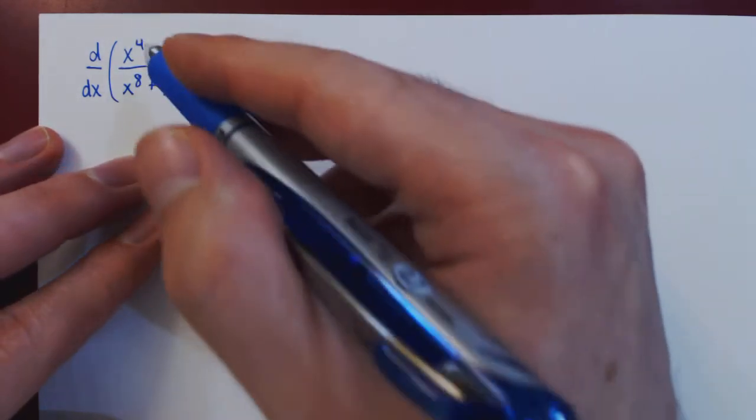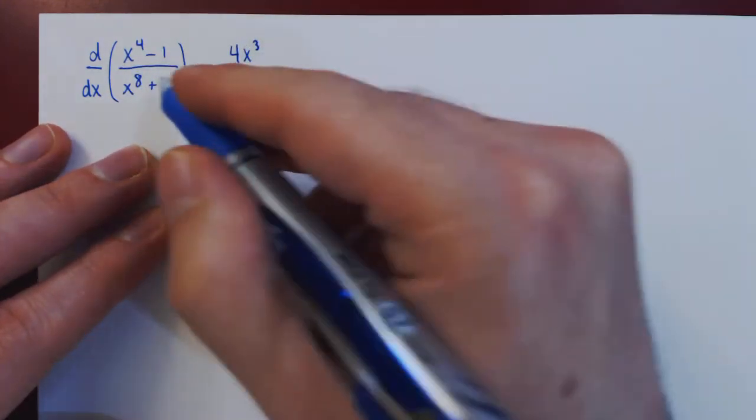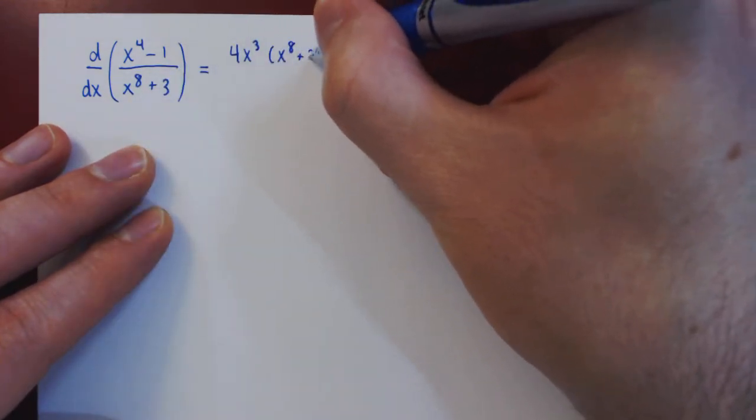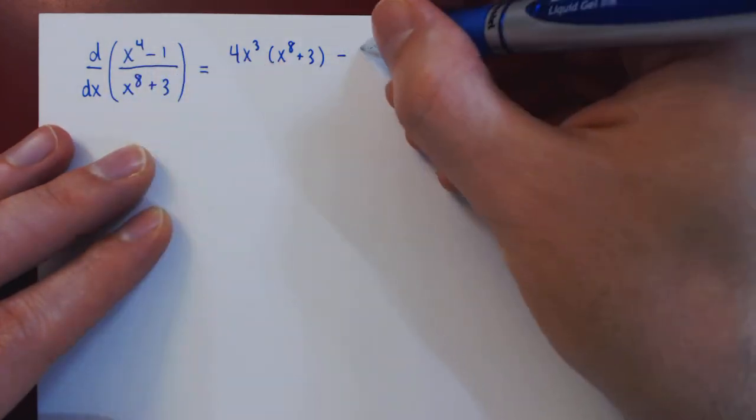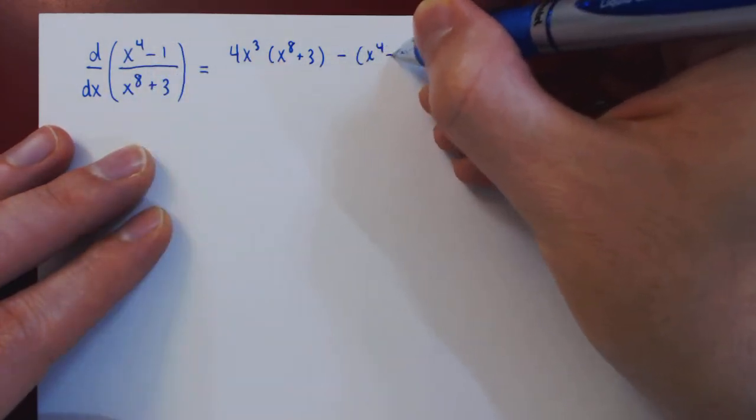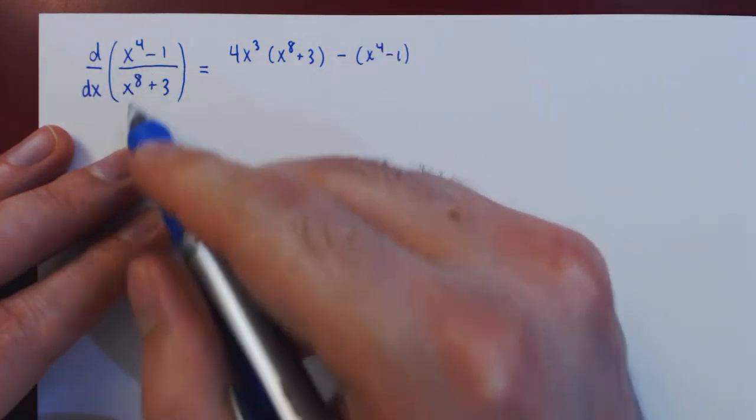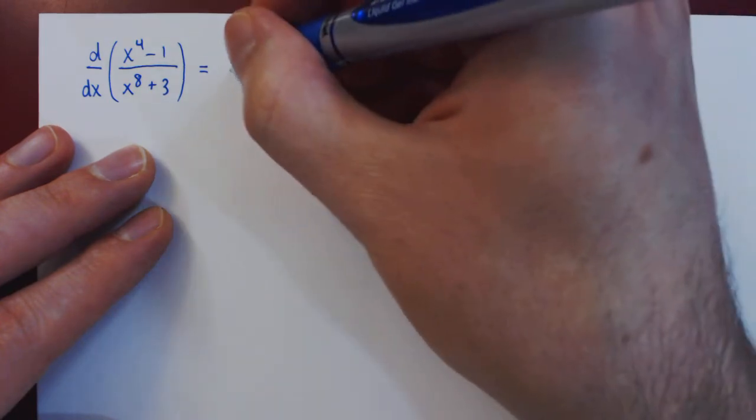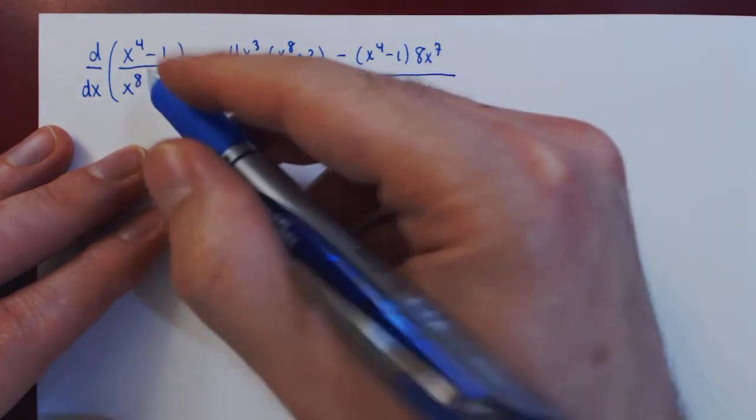So by the quotient rule we first take the derivative of the numerator, 4x cubed, then times the denominator, x to the 8 plus 3, then minus the numerator times now the derivative of the denominator, 8x to the 7. And of course, we have to divide all of this by the denominator squared.